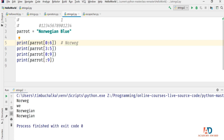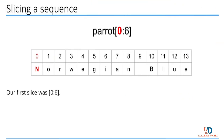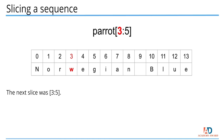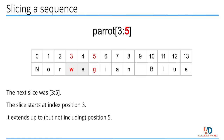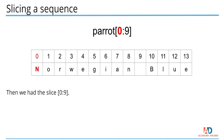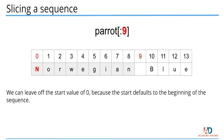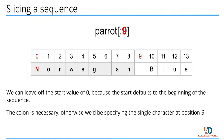The first slice was [0:6] — starts at index 0, extends up to but not including position 6. The next slice [3:5] starts at index 3 and extends up to but not including position 5. Then [0:9] starts at index 0 and extends up to but not including index 9. We can leave off the start value of 0 since it defaults to the beginning of the sequence, but the colon is necessary; otherwise we'd be specifying the single character at position 9.